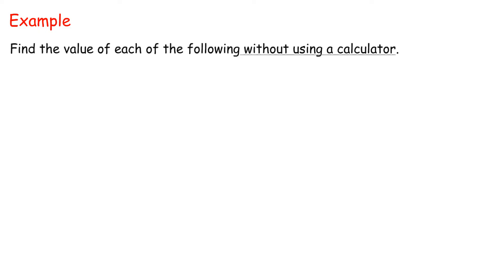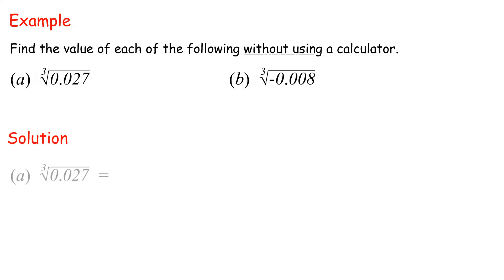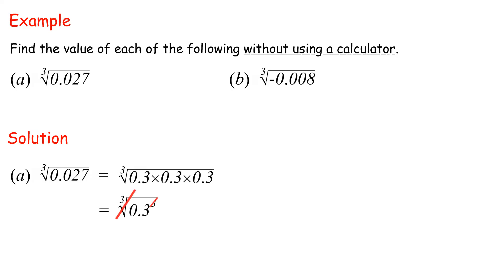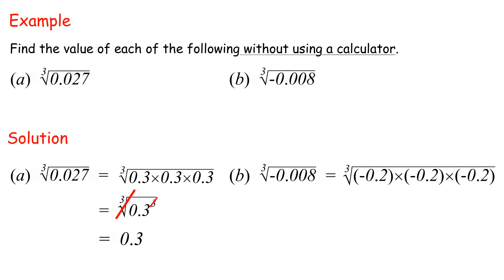Example: Find the value of each of the following without using a calculator. Solution A: Cube root of 0.027 equals cube root of 0.3 cubed equals 0.3. B: Cube root of negative 0.008 equals cube root of negative 0.2 cubed equals negative 0.2.